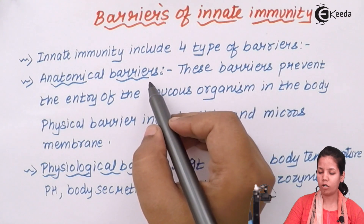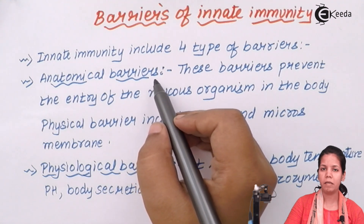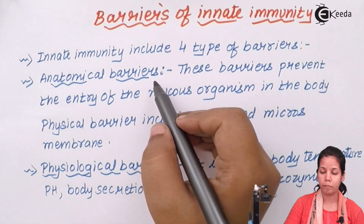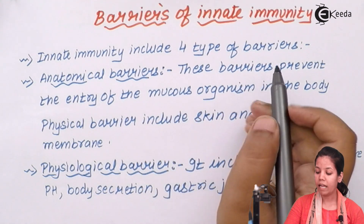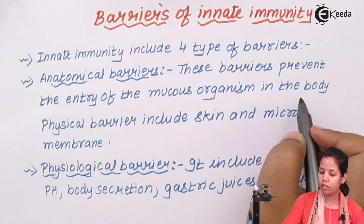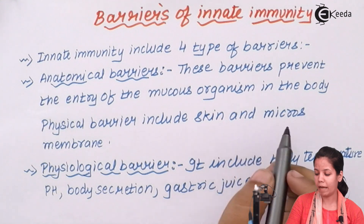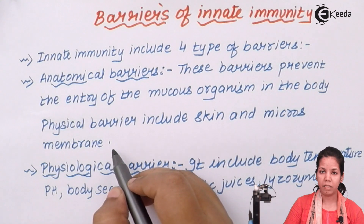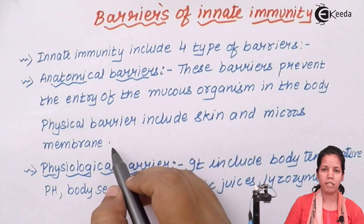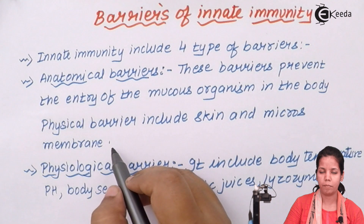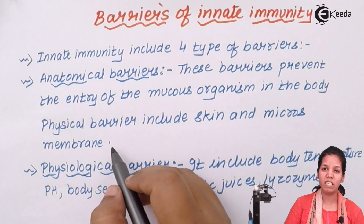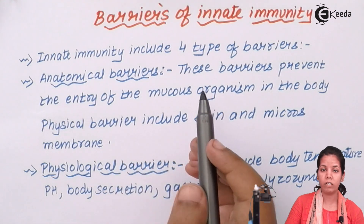The first barrier is the anatomical barrier. When I say anatomical barrier, it means the upper surface of your body — your skin, the first part of your anatomy. These barriers prevent the entry of mucosal organisms into the body. These physical barriers include the skin and the mucous membrane. Your skin has an epithelial layer — the topmost layer — and beside that there are different kinds of layers: compound epithelium, squamous epithelium, ciliated epithelium, and so on, depending upon the organ and region. This skin surface does not allow the entry of organisms. It is impermeable to most materials, and that is the first line of defense in terms of barriers for innate immunity.